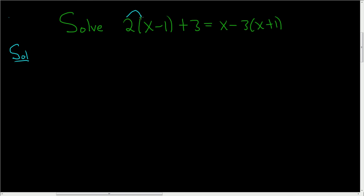We'll start by distributing the 2. So 2 times x is 2x, and 2 times negative 1 is negative 2. We still have this plus 3, so plus 3. On the right-hand side, we have x, and then minus 3 times x is minus 3x, and minus 3 times 1 is minus 3.